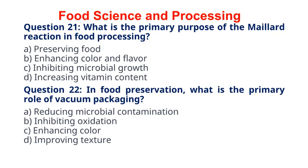Question 22. In food preservation, what is the primary role of vacuum packaging? A. Reducing microbial contamination. B. Inhibiting oxidation. C. Enhancing color. D. Improving texture. The correct answer to question 22 is option B. Inhibiting oxidation. Explanation. Vacuum packaging helps preserve food by removing oxygen, which reduces the risk of oxidative reactions and extends shelf life.